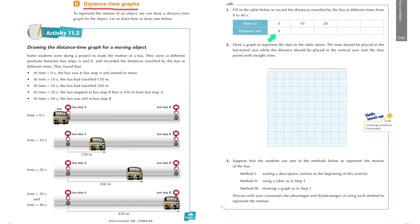We can record that at time zero, the distance traveled by the bus is zero. And then after 10 seconds, the bus has traveled 150 meters, so we can put 150 in the table.